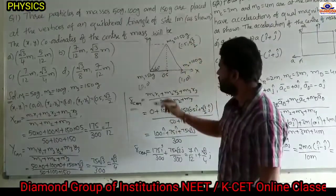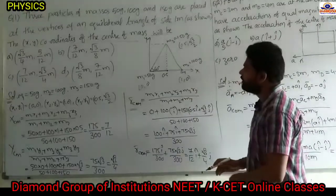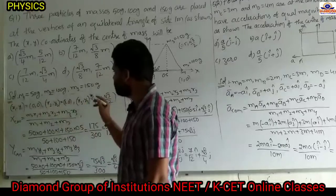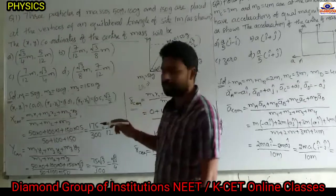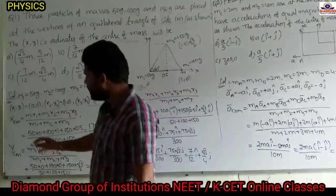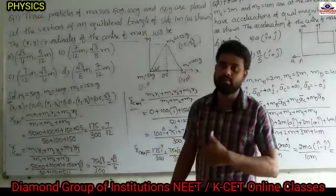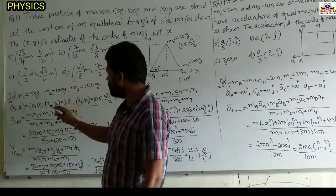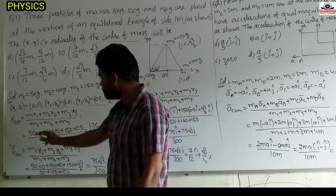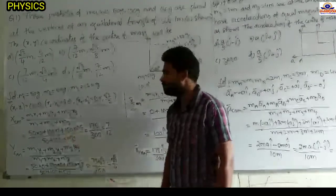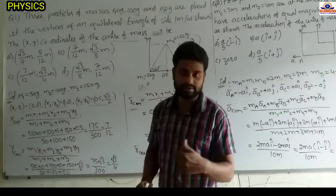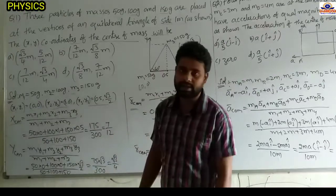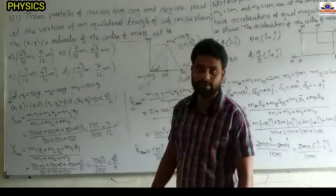Now we know the 3 masses and coordinates of those masses. The x-coordinate of the center of mass is (m1·x1 + m2·x2 + m3·x3) / (m1 + m2 + m3). Substituting: m1=50, x1=0; m2=100, x2=1; m3=150, x3=0.5. Denominator is 50+100+150=300. Numerator: 50×0=0, 100×1=100, 150×0.5=75, giving 175. So 175/300 = 7/12 meters for the x-coordinate.